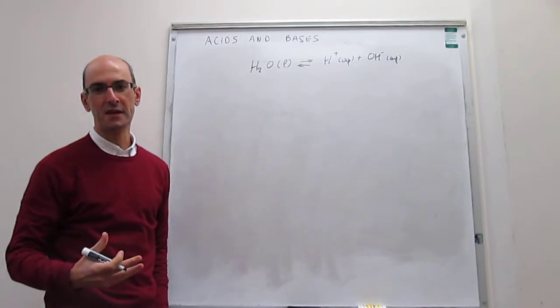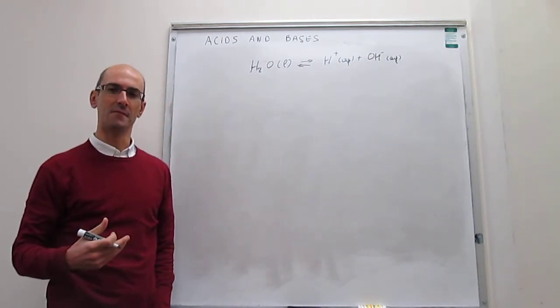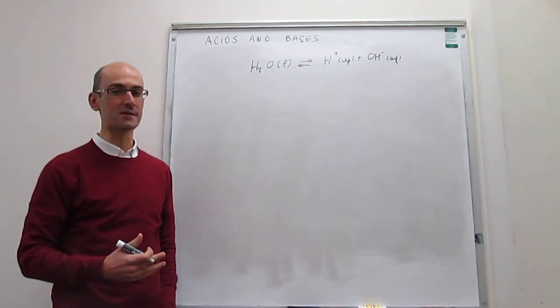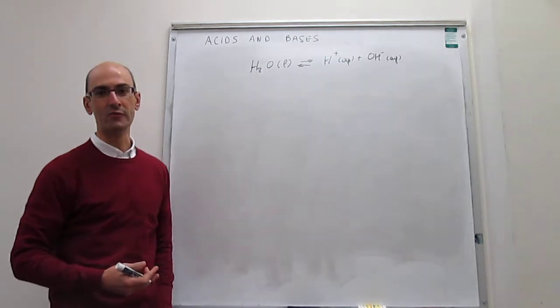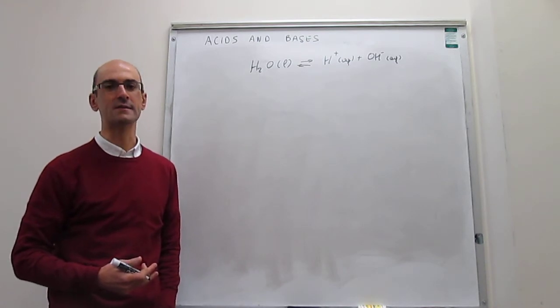So if we retake the Arrhenius definition of what an acid and a base is, an acid is something that provides protons when put in solution. A base is something that provides hydroxide ions when put in solution. When it turns out that water can do both, that's why it's called an amphoteric substance.